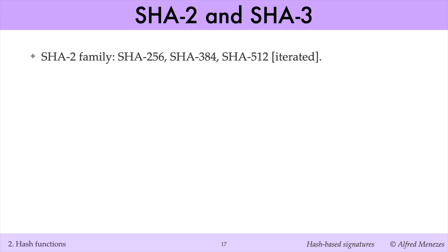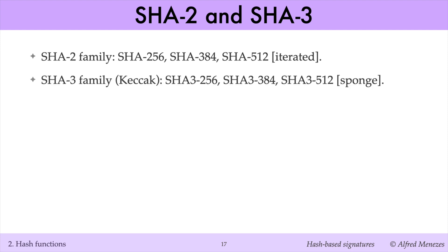The most commonly used hash functions today belong to the SHA-2 and SHA-3 families. The SHA-2 hash functions are iterated functions available in three output lengths: 256, 384, and 512 bits. The hash functions in the SHA-3 family use a sponge construction and also offer three output lengths: 256, 384, and 512. For both SHA-2 and SHA-3, the fastest attacks known for finding preimages, second preimages, and collisions are the generic attacks mentioned previously.